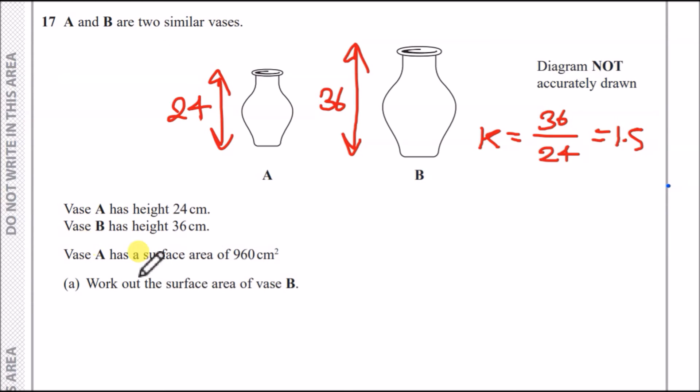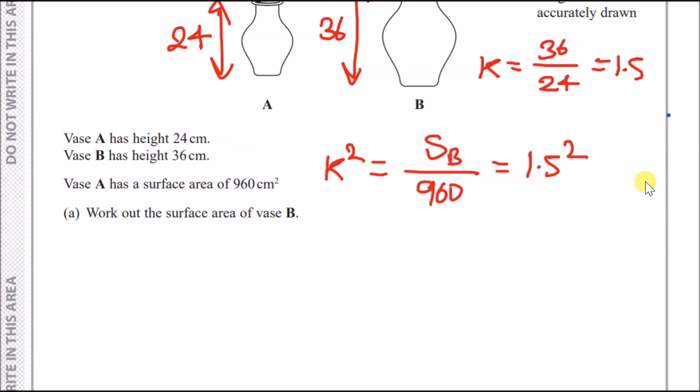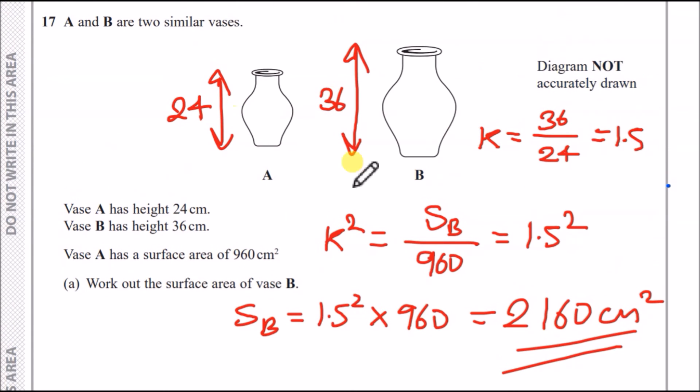Now, the next part says vase A has a surface area of 960 cm squared. Work out the surface area of vase B. See how we just divided the lengths? If we're dealing with areas, then we need to use a scale factor squared. And likewise, if we do volume, it has to be the scale factor cubed. So for the scale factor squared, we start off shape B. We can say that the surface area of shape B over the surface area of A, and it's supposed to equal a scale factor of 1.5 squared. This means that to work out surface area B, you just multiply 960 across. So S_B equals 1.5 squared times 960. If you put that in your calculator, you should get a result of 2160 centimeters squared.